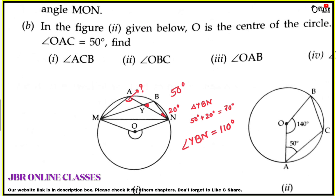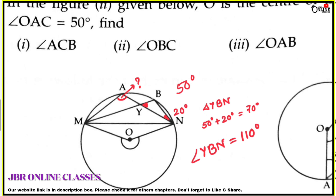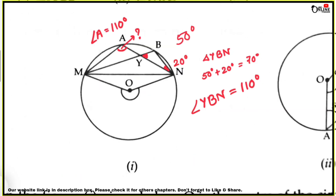Since angles MAN and MBN both lie on the same segment, they are equal. Therefore angle MAN equals 110 degrees.